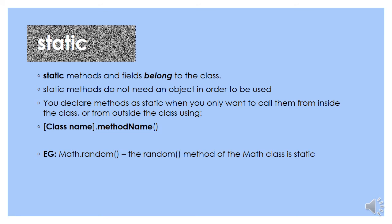What does the word static mean? Static methods and fields belong to the class, so a new one of them does not get created each time you make a new object of that class. Static methods do not need an object in order to be used. You declare methods as static when you want to call them from inside the class or from outside the class using className.methodName(). A good example is Math.random() — it is static because when you call it, you say Math.random(). You do not have to create a new object of the Math class. That would not make sense.